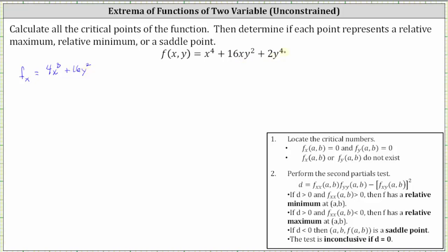The derivative of 2y to the fourth with respect to x is zero. Now let's find the partial of f with respect to y. We differentiate f(x, y) with respect to y, treating x as a constant. The derivative of x to the fourth with respect to y is zero. The derivative of 16xy squared with respect to y — we multiply by two and subtract one from the exponent on y — gives us 32xy. The derivative of 2y to the fourth with respect to y is 8y cubed.